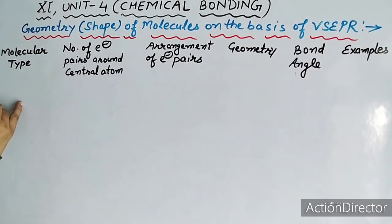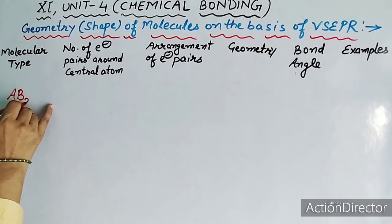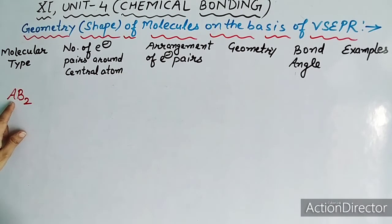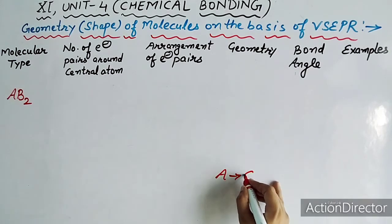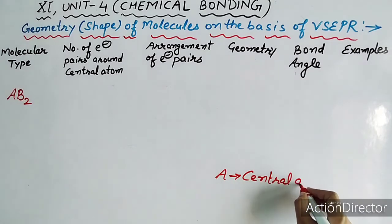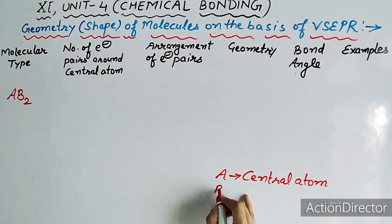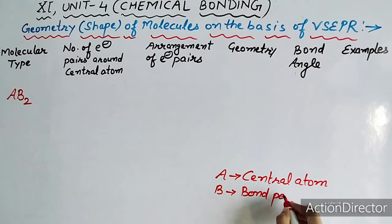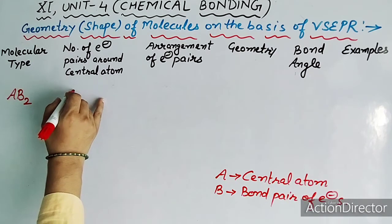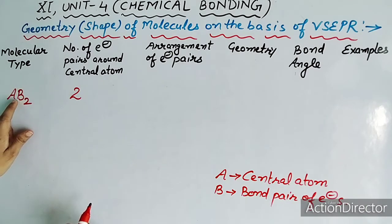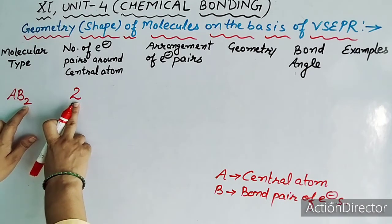सबसे पहले हम यहाँ पर molecular type लेते हैं — AB2 type. यहाँ A central atom है, और B bond pair of electrons को indicate करता है। तो A = central atom, B = bond pair of electrons. First molecular type AB2 में, number of electron pairs around the central atom कितने होंगे? 2 — क्योंकि B bond pair है और bond pairs हमने 2 लिए हैं।